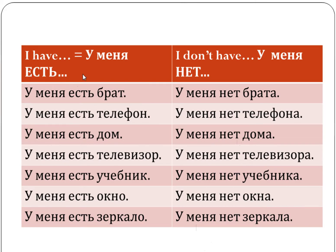So hopefully you've noticed that on the left hand side we have sentences that mean 'I have' in English. In Russian we use the structure У меня есть. Sometimes есть is skipped. У меня есть — and a whole bunch of examples. On the right hand side we have sentences that are equivalent to the English 'I don't have' — У меня нет.